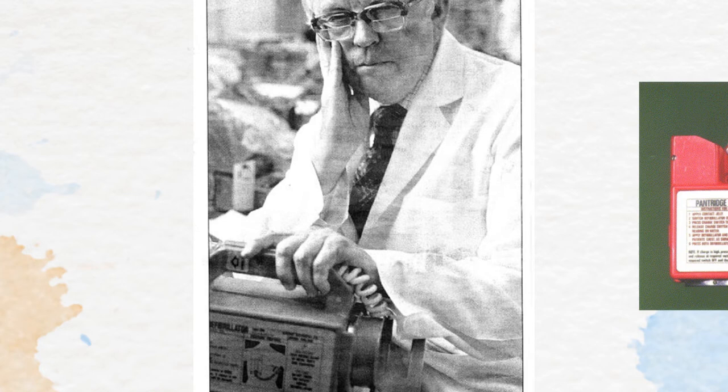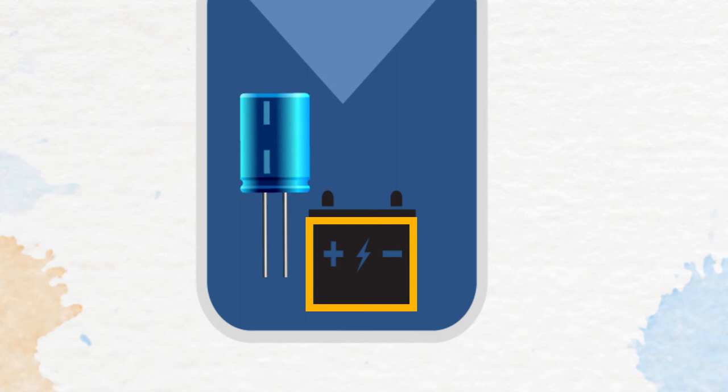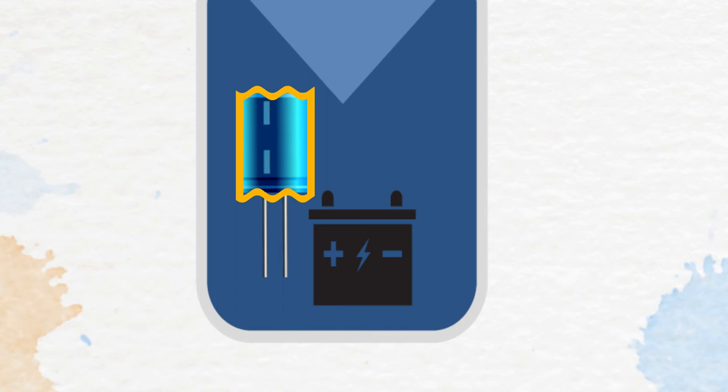If we can take a look inside the AED, we'll see the main components are the display, the large capacitor, the battery, and the logic circuitry. The primary function of an AED comes from charging a large capacitor within the device to deliver the shock to the patient. A capacitor is similar in practice to a battery, except that it can deliver even more of that energy almost instantaneously, whereas a battery delivers that energy over a longer period of time.